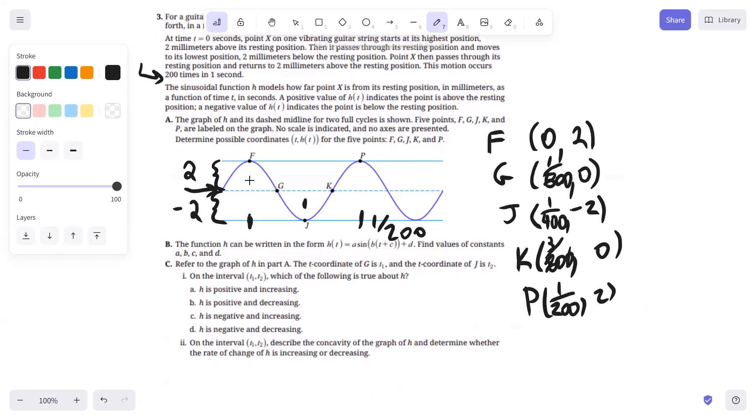Part B, the function H can be written in the form H of T. Find the values of the constants A, B, C, and D. Well, A is the amplitude, which is two. So we know that A is going to be two. B is related to the period by the fact that two pi over B equals the period. And we already said that it's going to take one two hundredth of a second to complete one cycle. So if we solve that for B, B is going to be 400 pi. We'll get to C in a second, but D is equal to zero because the function is not really shifted up or down.